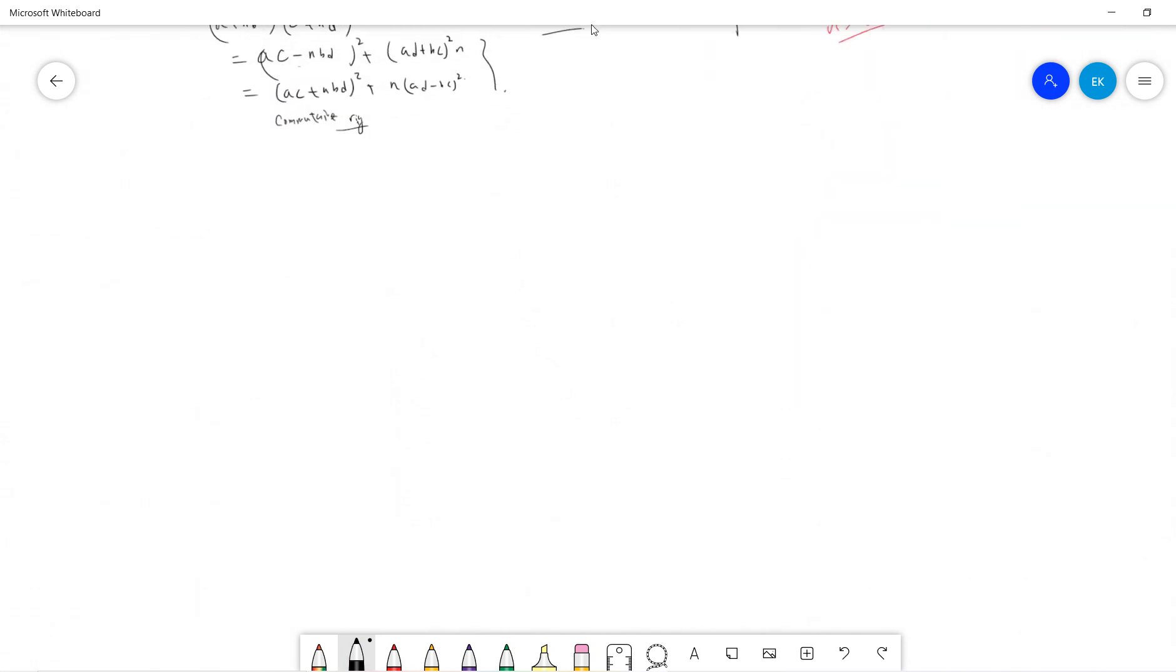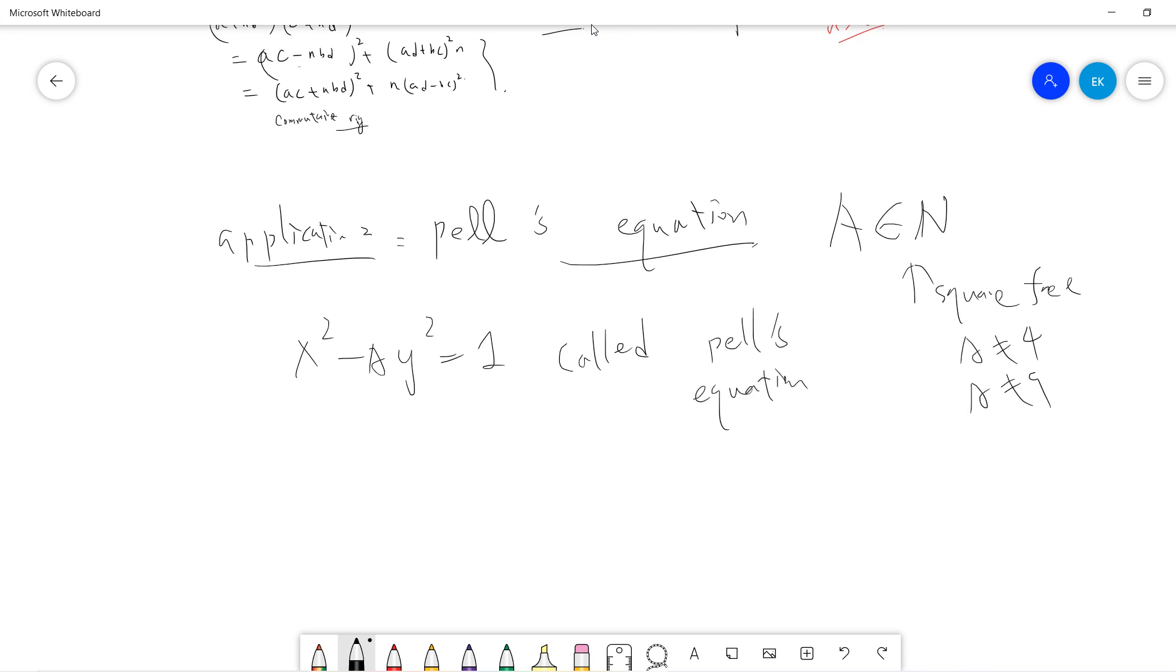The next application I want to talk about is Pell's equation. Pell's equation is that you take A as an integer which is square-free. Basically A cannot be 4 or 9, so A is not a perfect square number. And x²-Ay²=1 is called Pell's equation. By the way, Pell's equation has some relationship to quantum algorithms, which is very difficult. If I have time, I can talk about it.